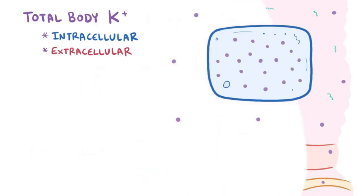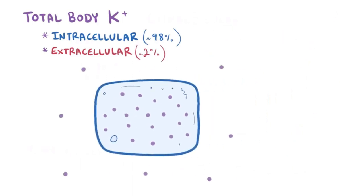The vast majority, around 98%, of all the body's potassium is intracellular, or inside of the cells. In fact, the concentration of potassium inside the cells is about 150 milliequivalents per liter, whereas outside the cell it's only about 4.5 milliequivalents per liter.